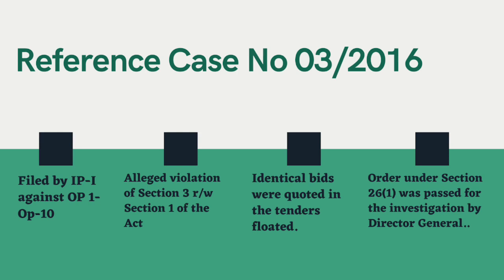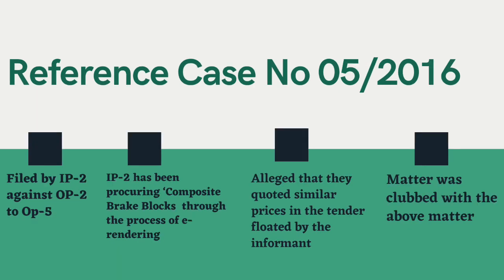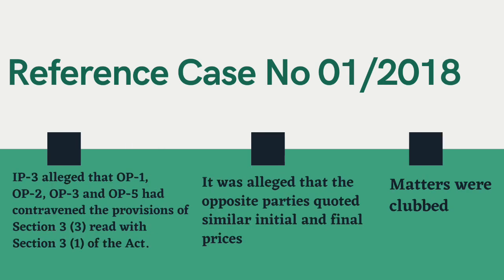An order under Section 26, Subsection 1 was passed for investigation by the Director General. The second reference was filed by IP2 against OP2 to OP5, alleging contravention of Section 3 read with Section 1 of the Act. IP2 has been regularly procuring composite brake blocks (CBB) for its different divisions through e-tendering from firms as per guidelines issued by the Ministry of Railways. It was alleged that they quoted similar prices in a tender floated by the informant for procuring composite brake blocks, which were higher than prices quoted in a previous tender floated by the Western Railway for the same item. An order under Section 26, Clause 1 was passed again for investigation by the Director General.